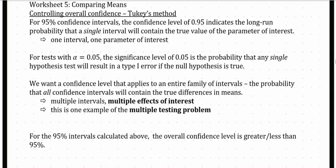In our previous video we learned how to do an ANOVA and then followed that ANOVA up, if we had strong evidence against a null hypothesis, using Fisher confidence intervals. But there are problems with Fisher confidence intervals in that each interval has 95% confidence of containing the true difference.